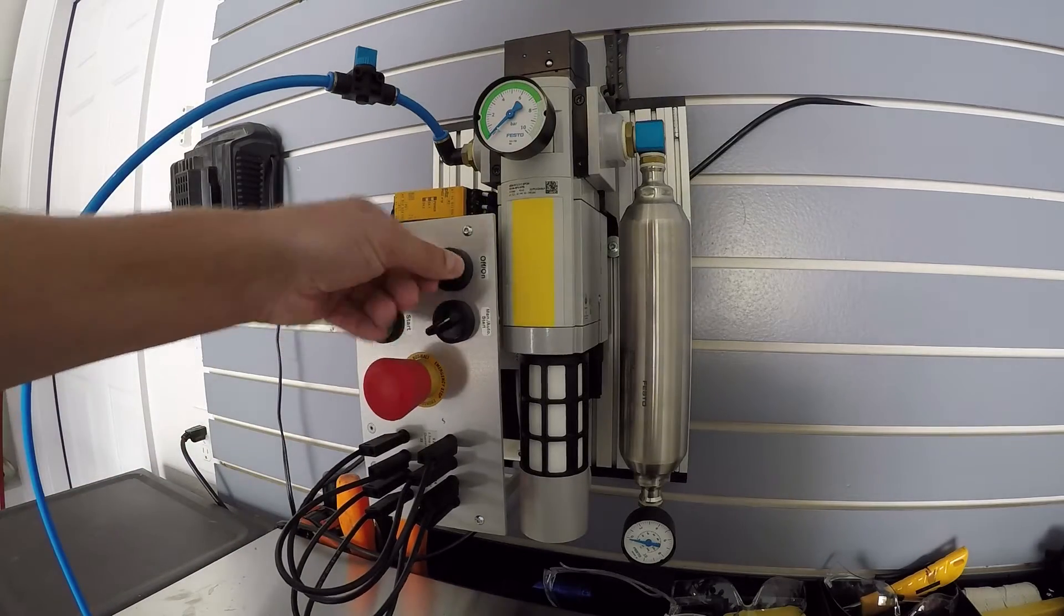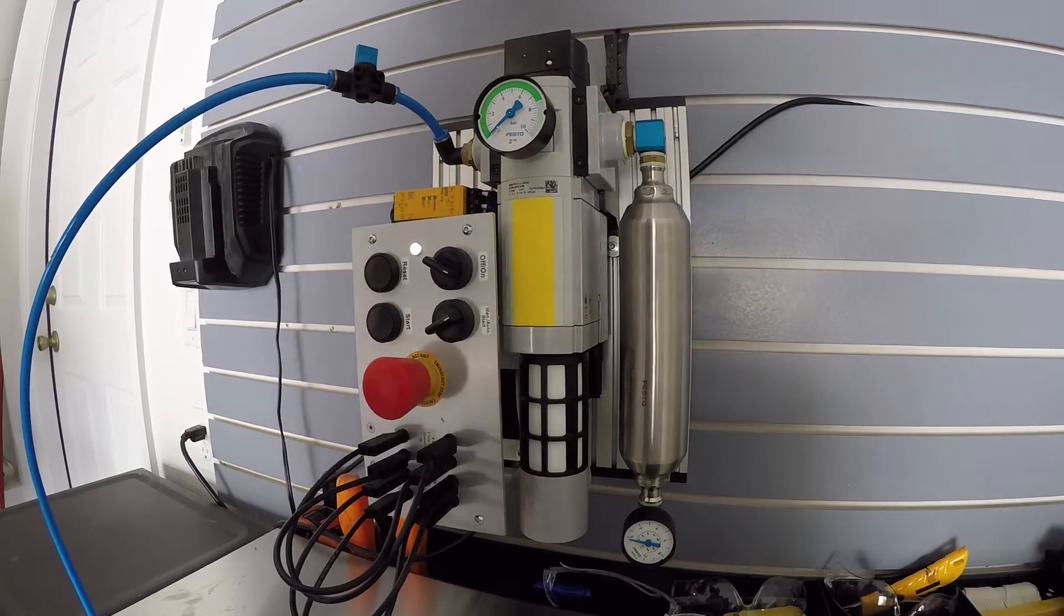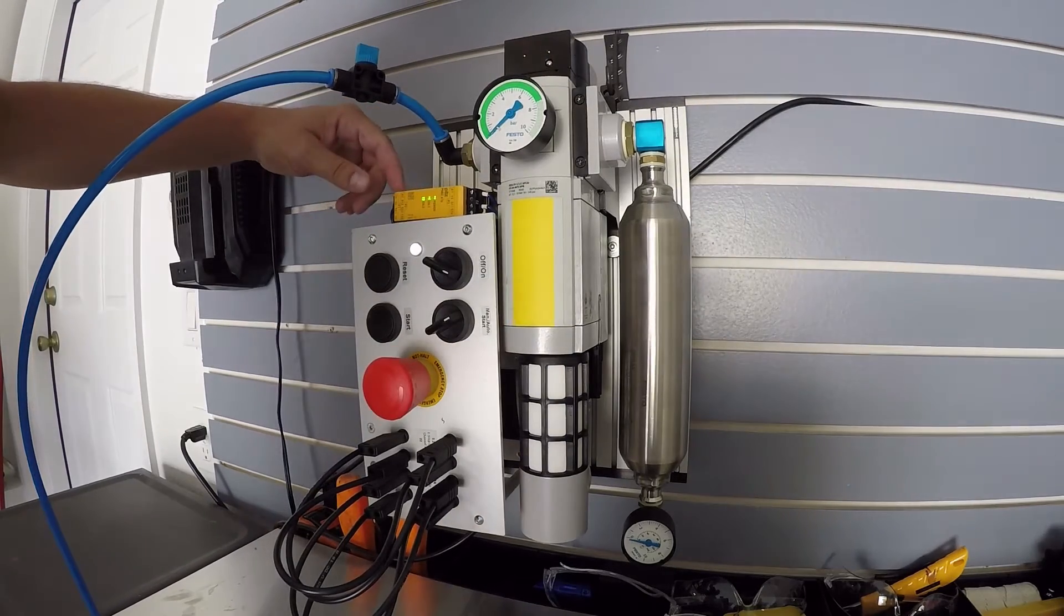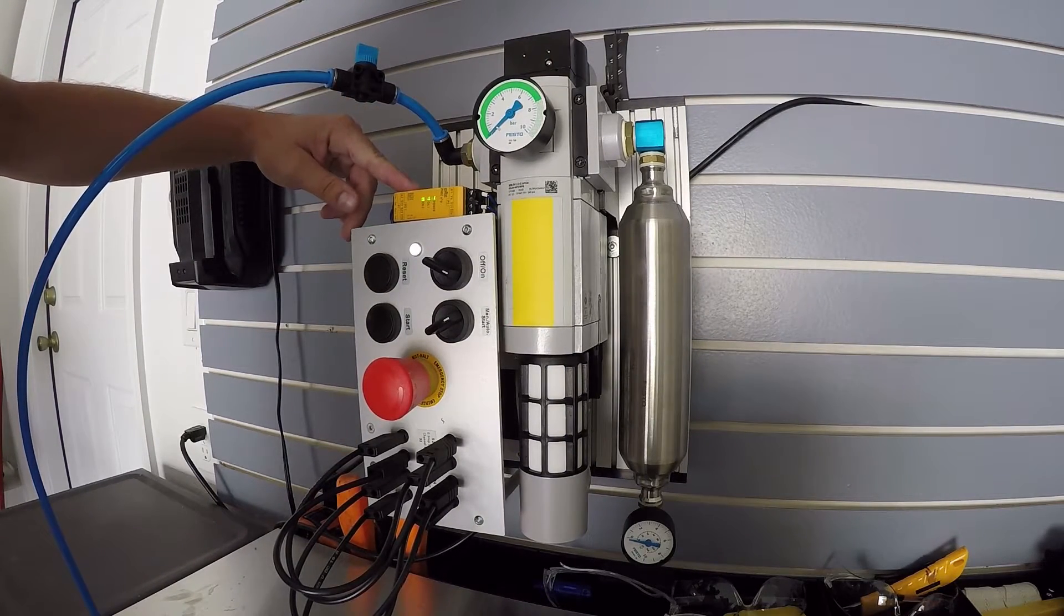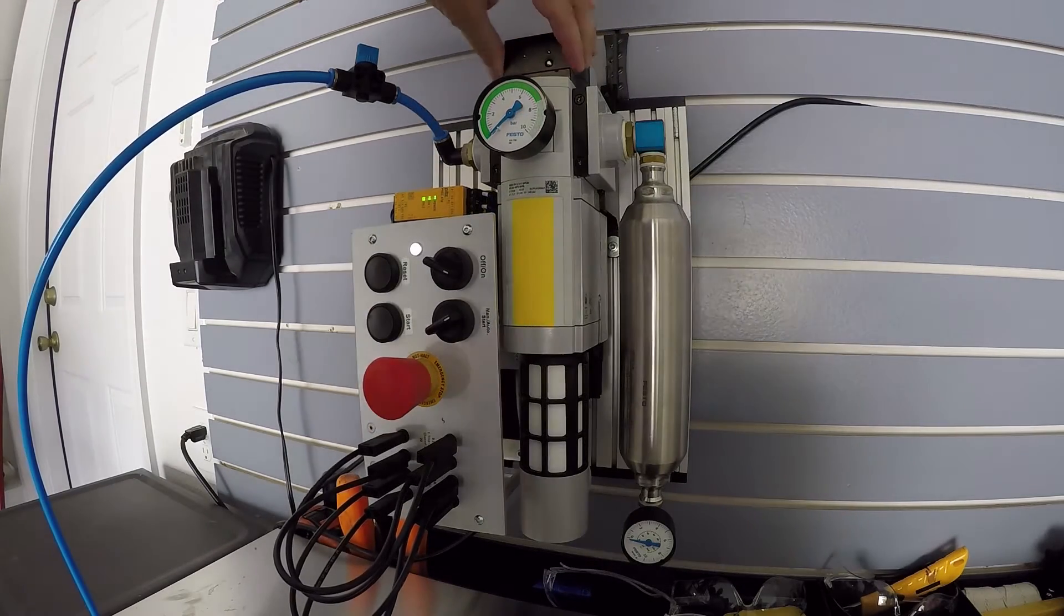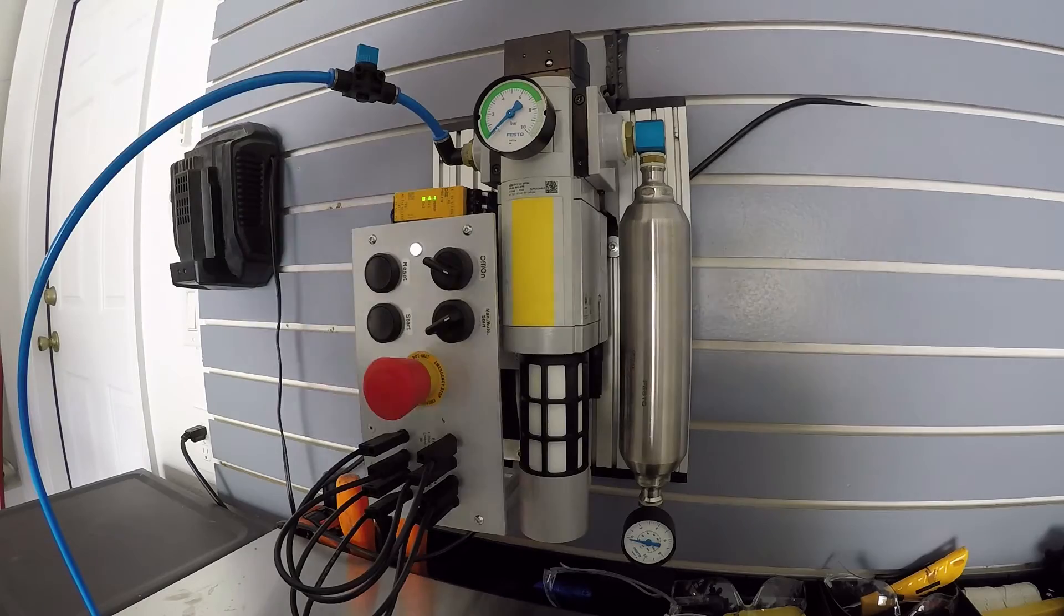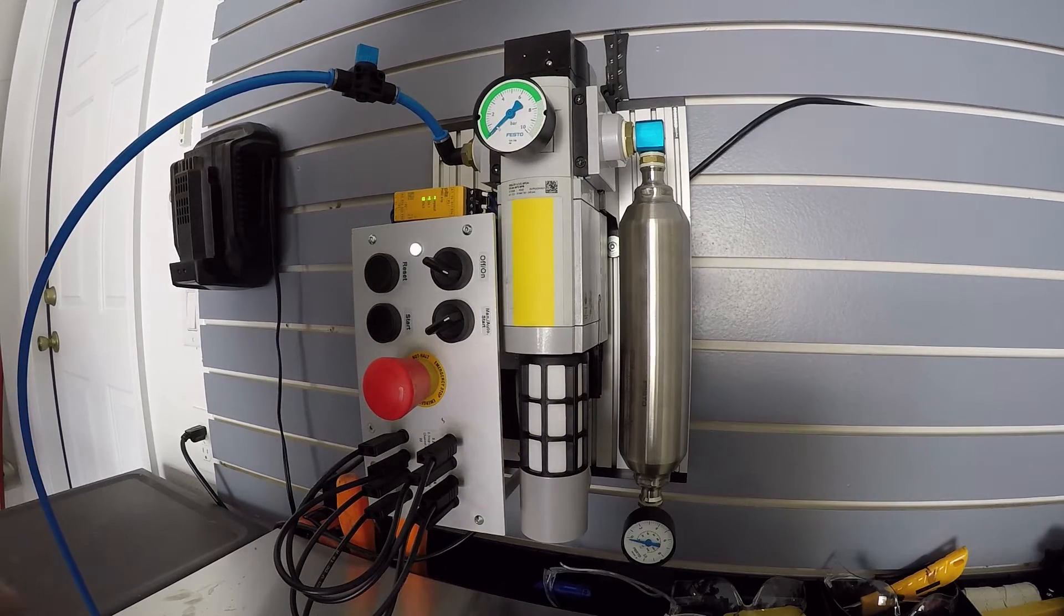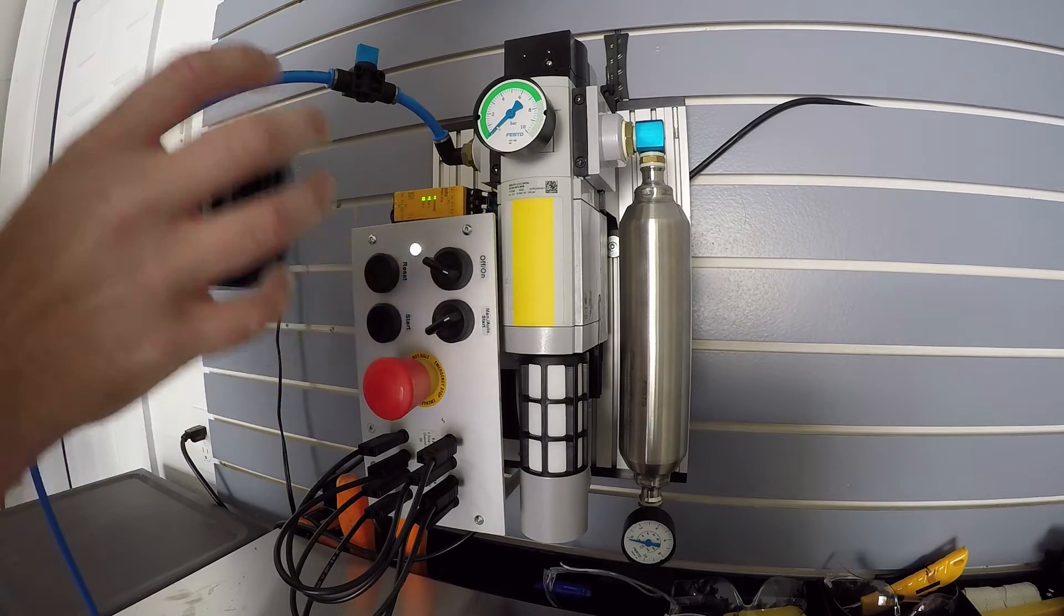What that means is once I turn the power on, the system performs a self-check. The safety relay here does a self-check. The dump valve also does a self-check. You hear that little puff of air. What that's doing is it's doing a little cycle there just to make sure that everything's running correctly. So once you start the valve, that's what should happen.